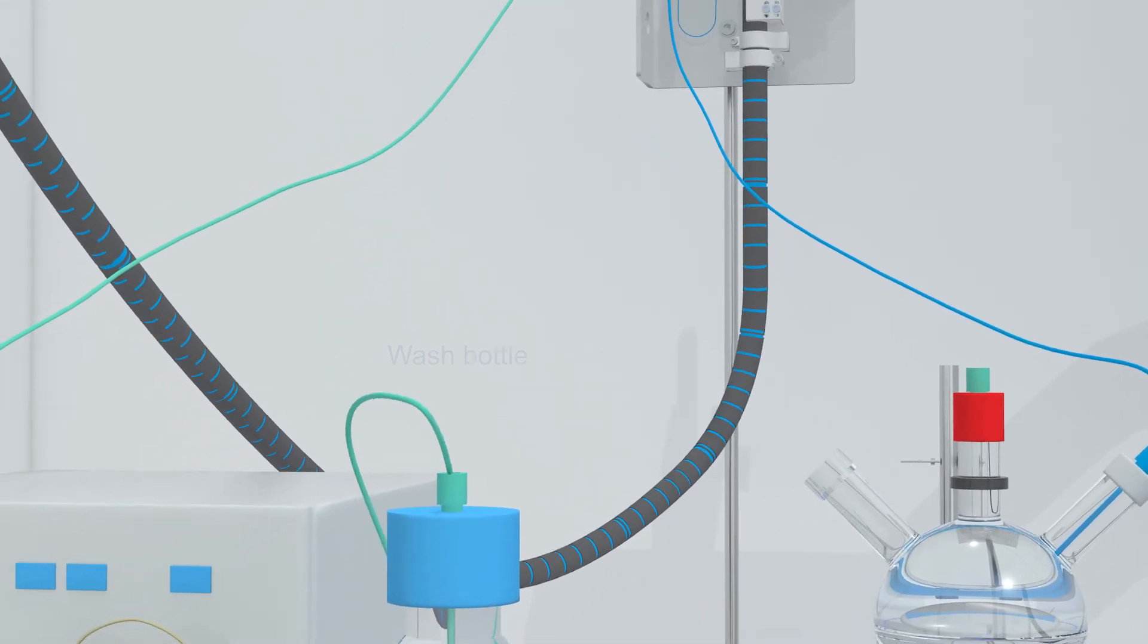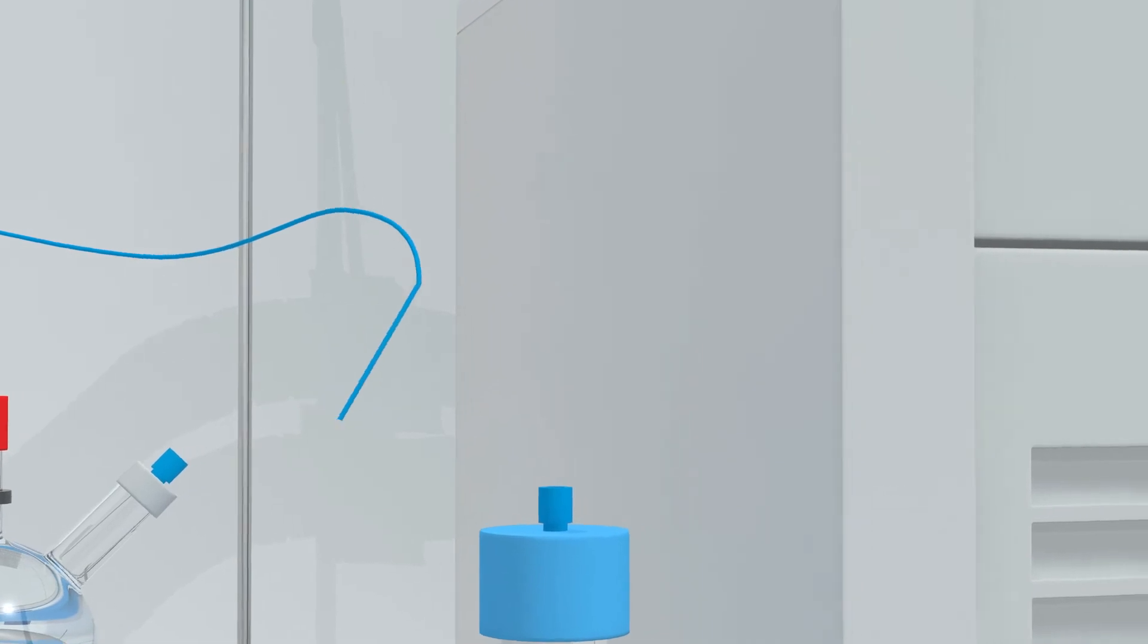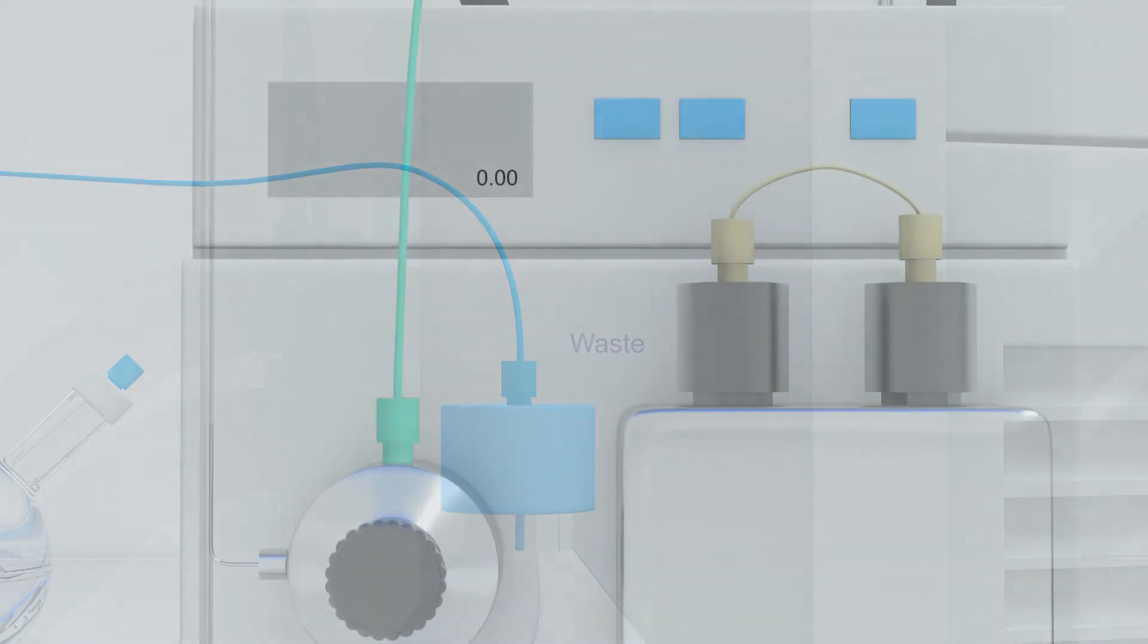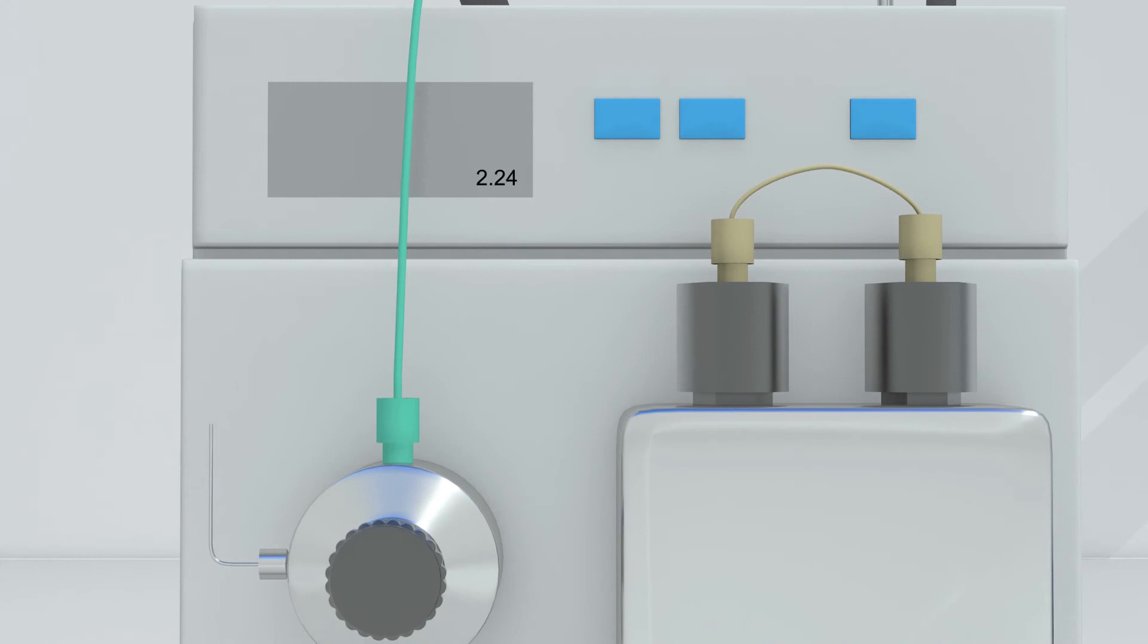Place it into a wash bottle with a suitable solvent and disconnect the sample return line from the reactor and direct it to waste. Switch the sample flow on and rinse the sample line with solvent. Switch the flow off once this is done.